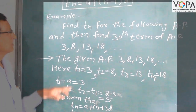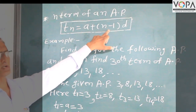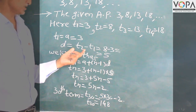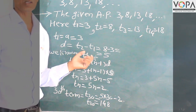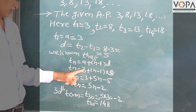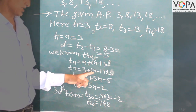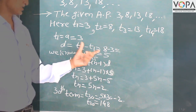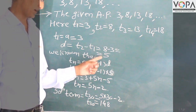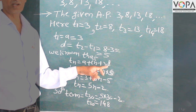Therefore, we know that tn is equal to a plus n minus 1 into d. In this situation, a is equal to the first term, which is equal to 3, and d, the common difference, is equal to 5.